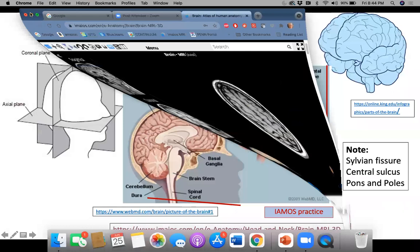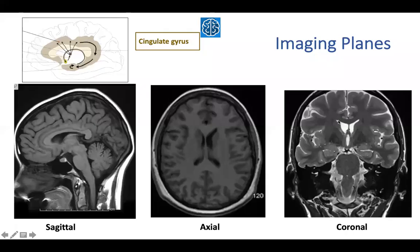Now we're going to go back to our lecture, and periodically we're going to go to IMAOs to practice. Now you can recognize a sagittal plane, an axial plane, and a coronal plane. I want to point out this gyrus called the cingulate gyrus. It's comprised of frontal and parietal cortex and wraps around and picks up in the medial temporal lobe. The cingulate gyrus is very important in memory. We're going to see that the posterior cingulate gyrus atrophies early in Alzheimer's disease, while in frontal temporal dementias, the anterior cingulate gyrus will atrophy.